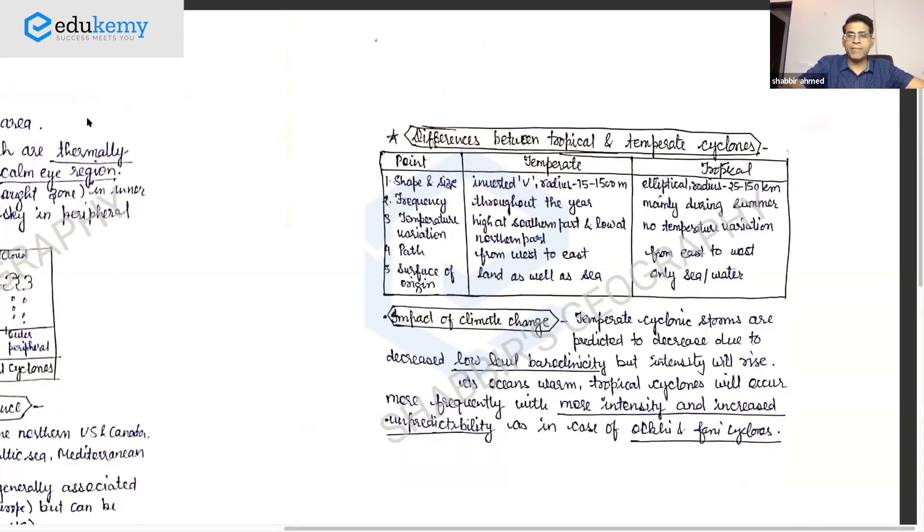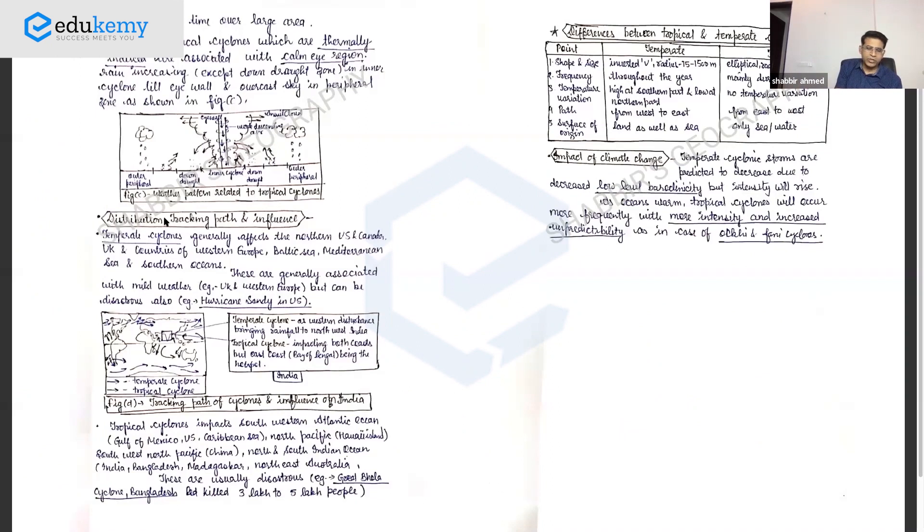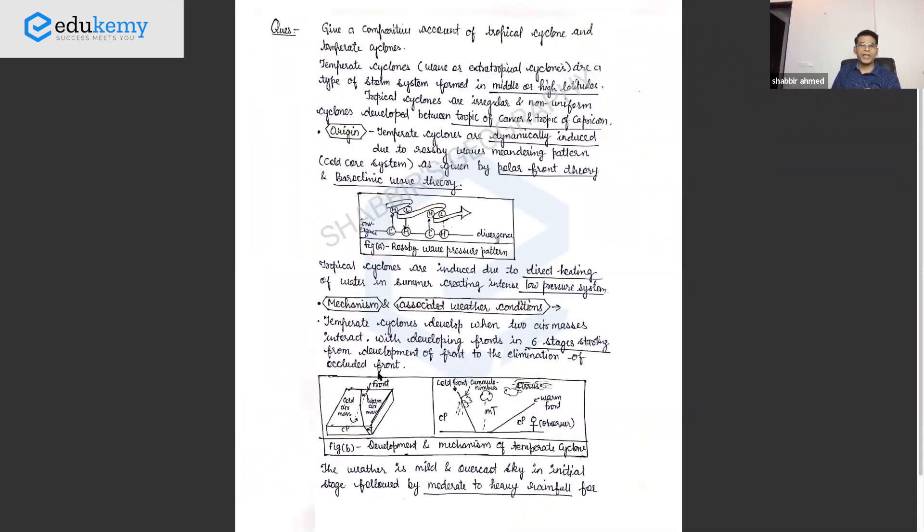Look at this example of quick facts put into a table. You could have put this table at the beginning, but here the person decided to put it towards the end - that's fine. This was probably a 10 or 15 mark question, approximately two and a half pages. See the amount of content compressed - you must learn that. Shape, size, frequency, temperature variations, path, surface of origin - basic facts in a table. This is one theme: distribution, tracking, weather type is one theme, origin is one theme, and basic points can be in a table for quick comparison.